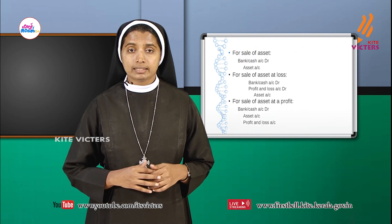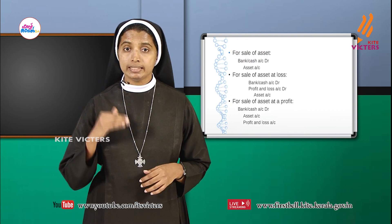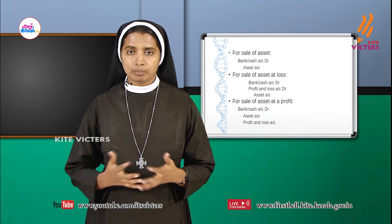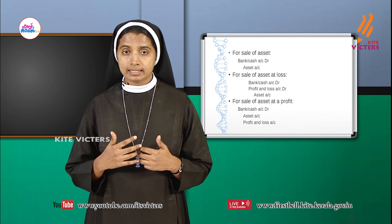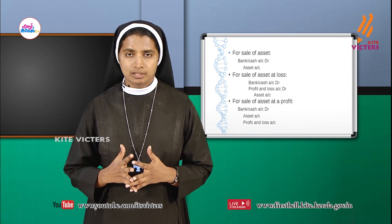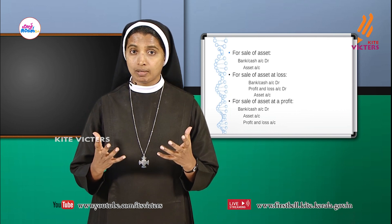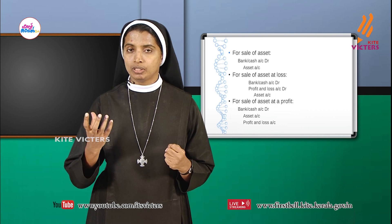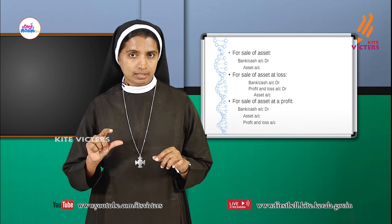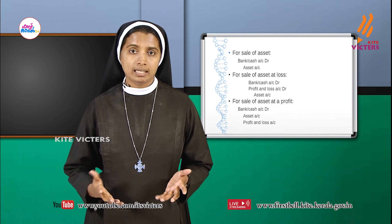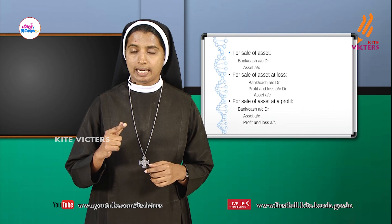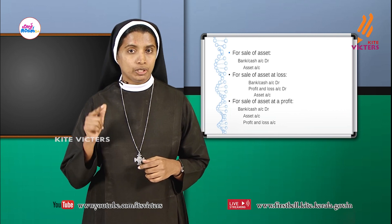For sale of asset: when we sell an asset, we will receive cash or cheque, so bank or cash increases. The journal entry is bank or cash account debit to asset account, because the asset is going out and should be credited.